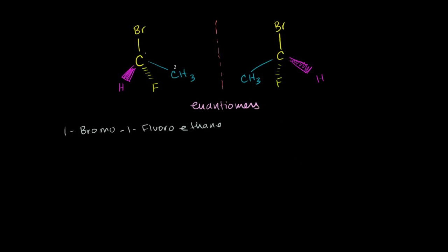The naming system we're going to use right here is called the Cahn-Ingold-Prelog system. But it's a different Cahn — it's C-A-H-N instead of K-H-A-N. Cahn-Ingold-Prelog system.